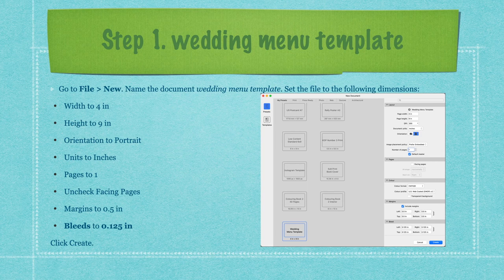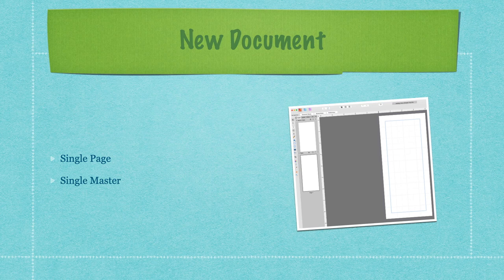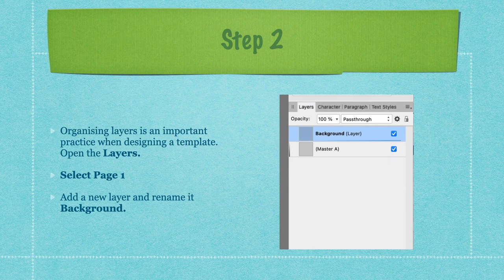Once you press Create, you end up with a new single-page document with a single master. We're not going to use the master, so you can hide it by clicking on the little triangle next to the words 'master pages.' That will hide it, otherwise it kind of gets in the way. Organizing layers is an important practice when designing a template, so open the layers panel on the right-hand side.